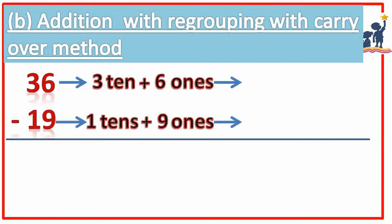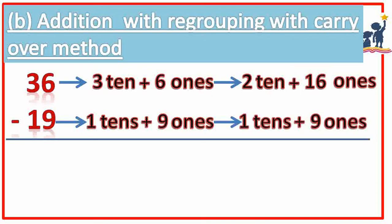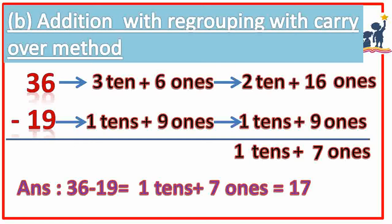Subtraction with regrouping: 36 minus 19. 36 can be written as 3 tens plus 6 ones, and 19 can be written as 1 ten plus 9 ones. Here 9 is greater than 6, so 3 tens plus 6 ones is converted into 2 tens plus 16 ones. The solution becomes 16 minus 9 is equal to 7 ones, and 2 minus 1 is 1 ten. So our answer becomes 36 minus 19 is equal to 1 ten plus 7 ones, is equal to 17.